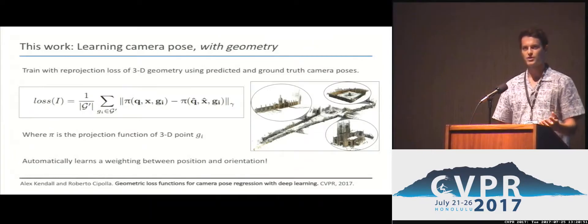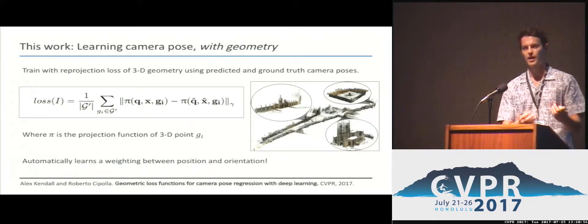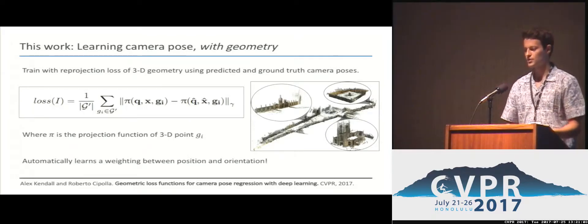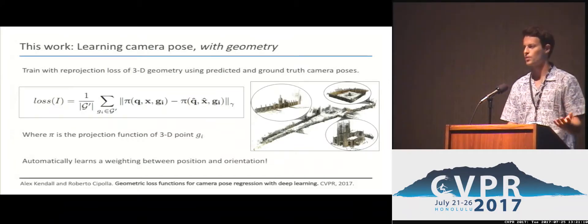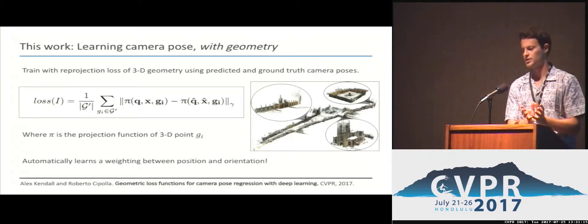Specifically, we're using the 3D geometry of the scene to reproject into 2D image space and train on that, which naturally combines position and orientation into a single regression value. This can be related to a deep learning version of bundle adjustment, where we're training in a differentiable way on reprojection error into 2D image space.